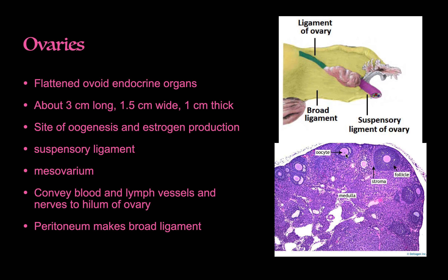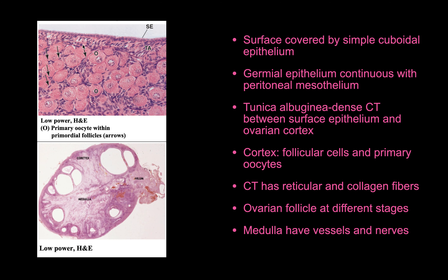The surface of the ovary is covered by simple cuboidal epithelium — the germinal epithelium — which is continuous with the peritoneal mesothelium. The tunica albuginea is dense connective tissue that lies between the surface epithelium and the ovarian cortex. The cortex contains the follicular cells and primary oocytes, supported by connective tissue with reticular and collagen fibers.